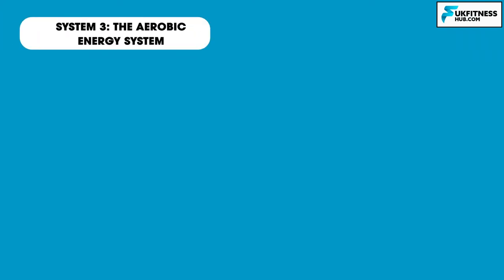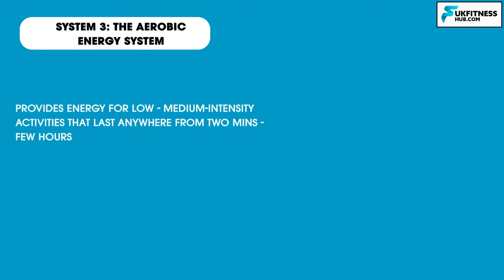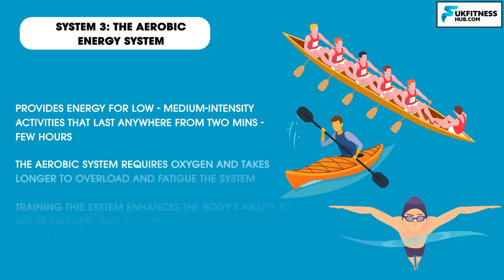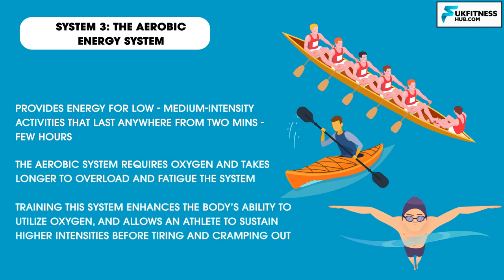System 3: The aerobic energy system. The aerobic system provides energy for low to medium intensity activities that last anywhere from 2 minutes to a few hours. Any sport that has repeated shifts, rallies, events, or sustained exercise such as long-distance swimming, rowing, and kayaking all rely on the aerobic system. Unlike the other two systems, the aerobic system requires oxygen and takes a far longer time to overload and fatigue. Training this system enhances the body's ability to utilize oxygen and allows an athlete to prolong the ability to sustain higher intensities of exercise before tiring.